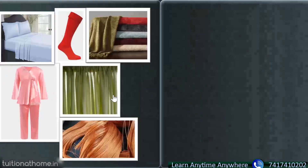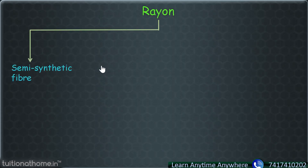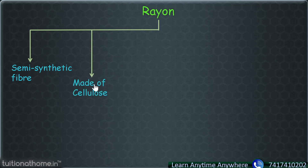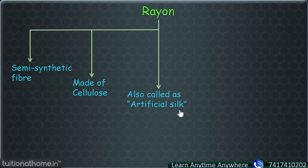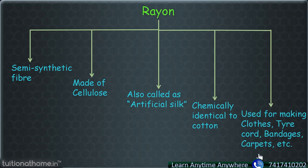So overall, what have we learned? We have learned about rayon: first, it is a semi-synthetic fiber; second, it is made up of cellulose; third, we can also call it artificial silk; fourth, it is chemically identical to cotton; and lastly, we have learned some of its uses.